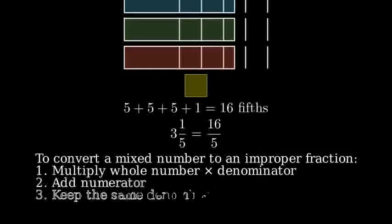Therefore, three and one-fifth is equal to sixteen fifths. This method works for any mixed number. Just multiply the whole number by the denominator and add the numerator to get your improper fraction.